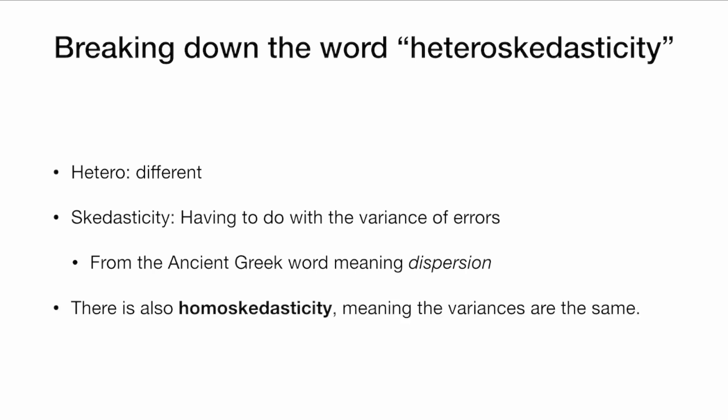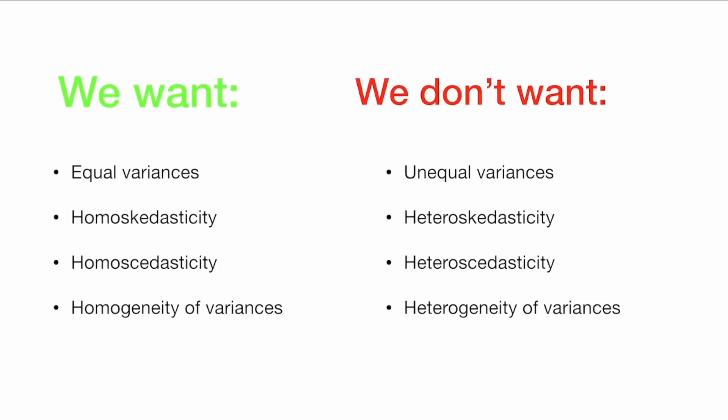And of course there's also homoscedasticity, which means the variances are the same. So when we run linear regression, what we want is equal variances. We want homoscedasticity.